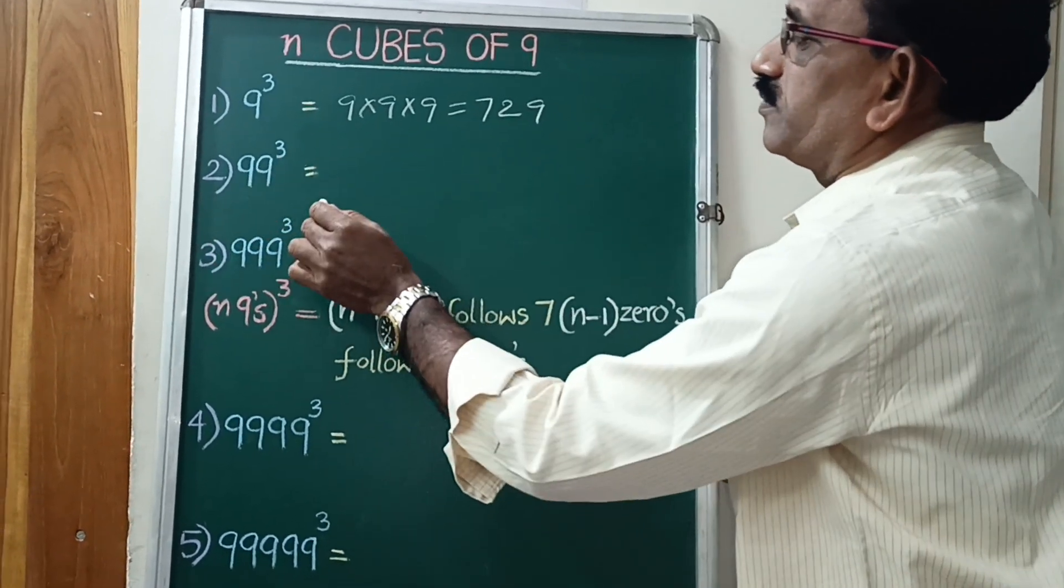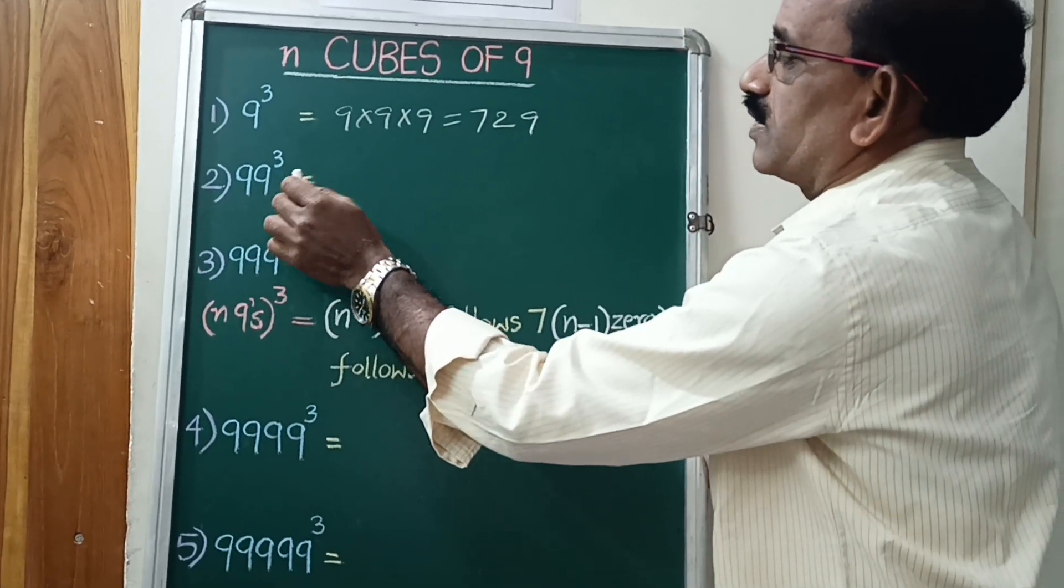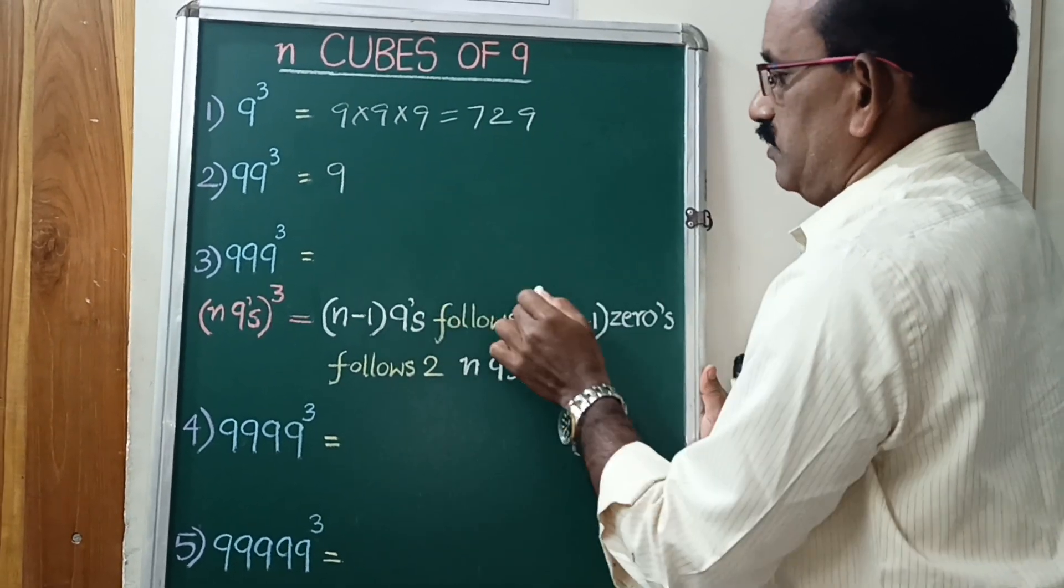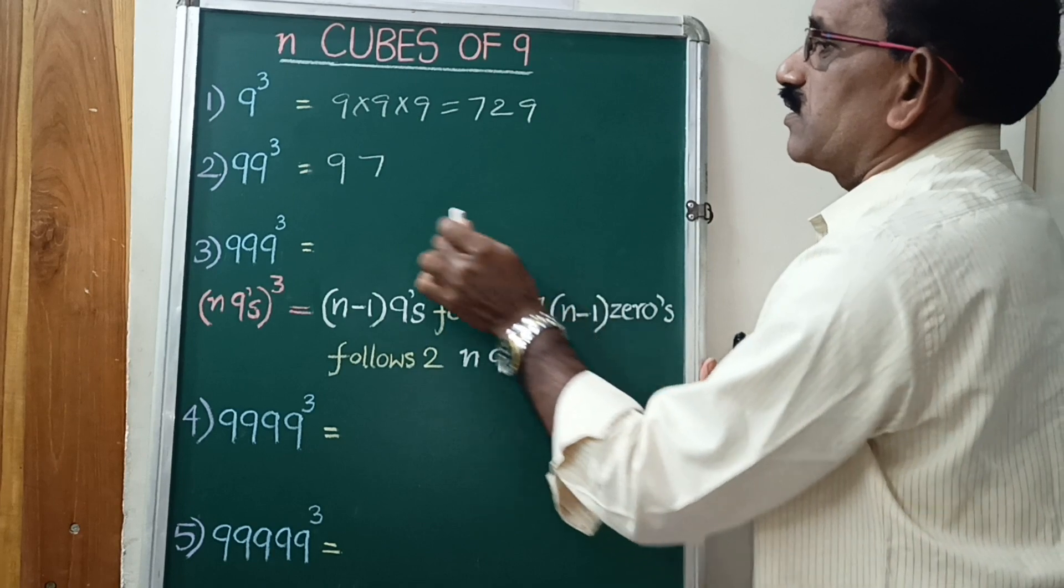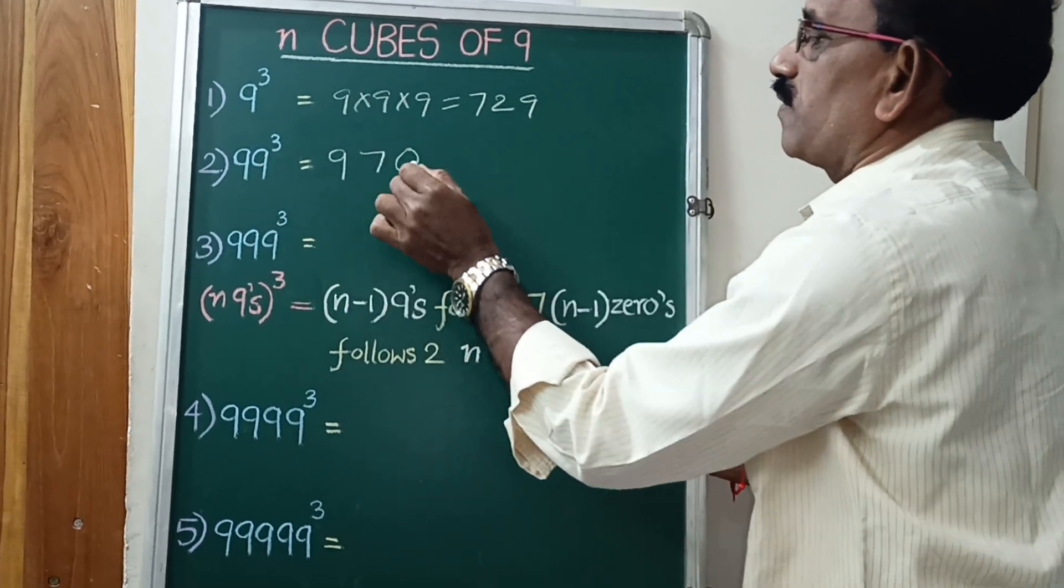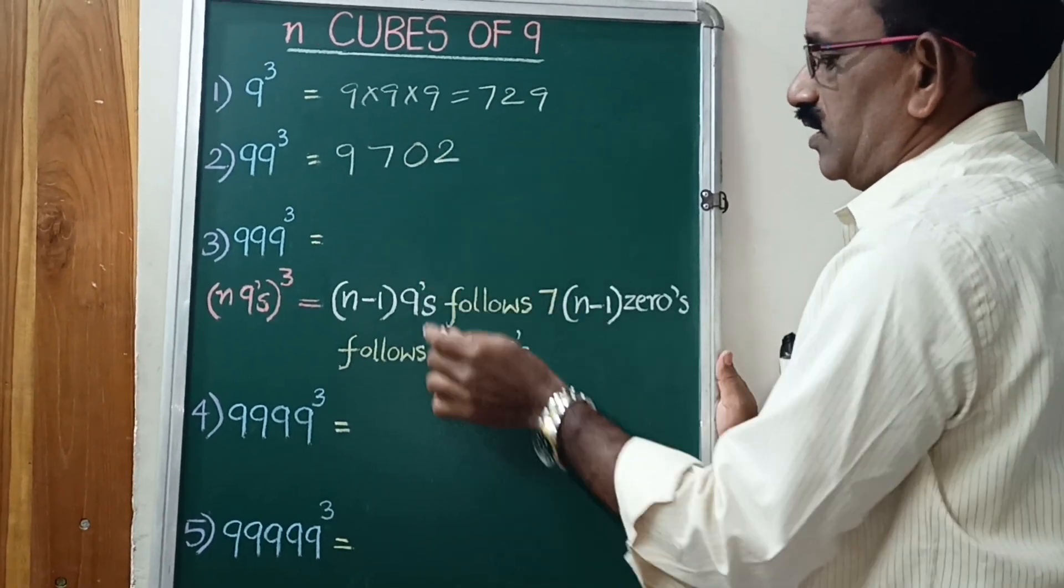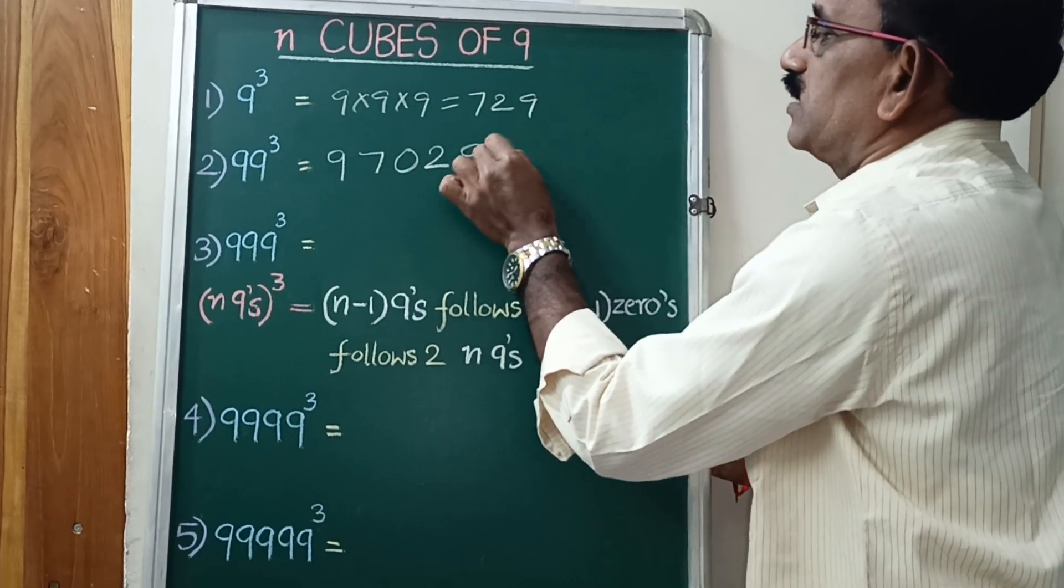Here, 99 cube. 99 cube equal to N minus 1, and then 9, follows 7. 7, N minus 1, 0's. Here, 2 minus 1 is 1, 0. Next follows 2, N 9's, 2 9's. That is the answer.